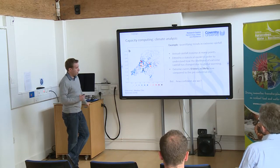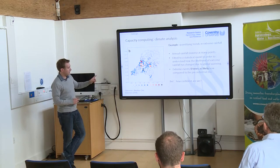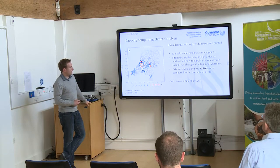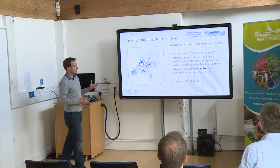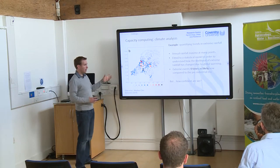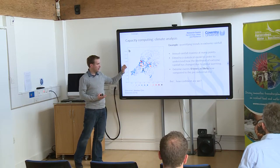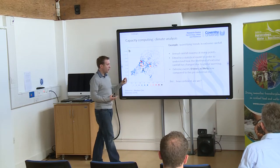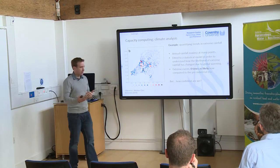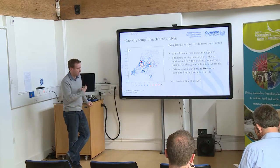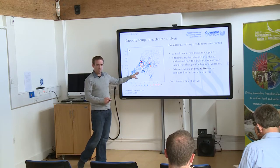A different example where we might use multiprocessing: quantifying trends in extreme rainfall in the Netherlands. Here we have annual rainfall maxima at many points around the country, fitted to a statistical model to understand how the likelihood of extreme rainfall has changed due to global warming. We're able to conclude that extreme events are four times as likely now compared to the pre-industrial, since a warming atmosphere with rising global surface temperatures gives greater moisture-carrying capacity. But how confident are we in this statement? Is it statistically significant?